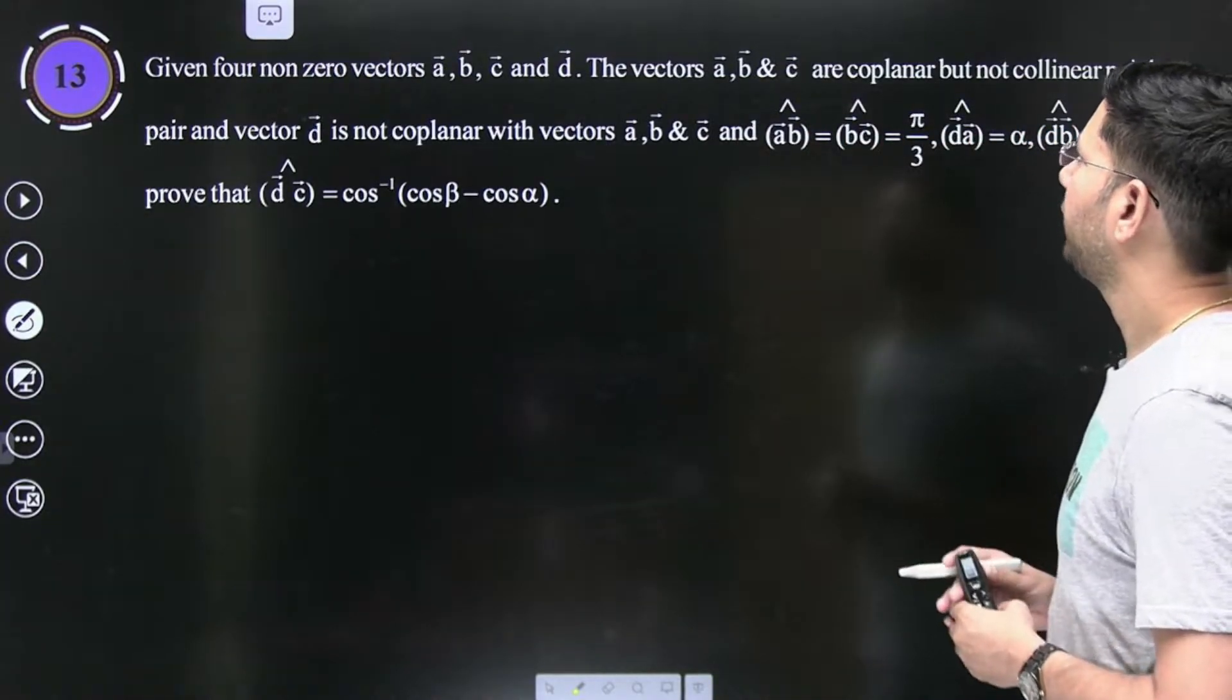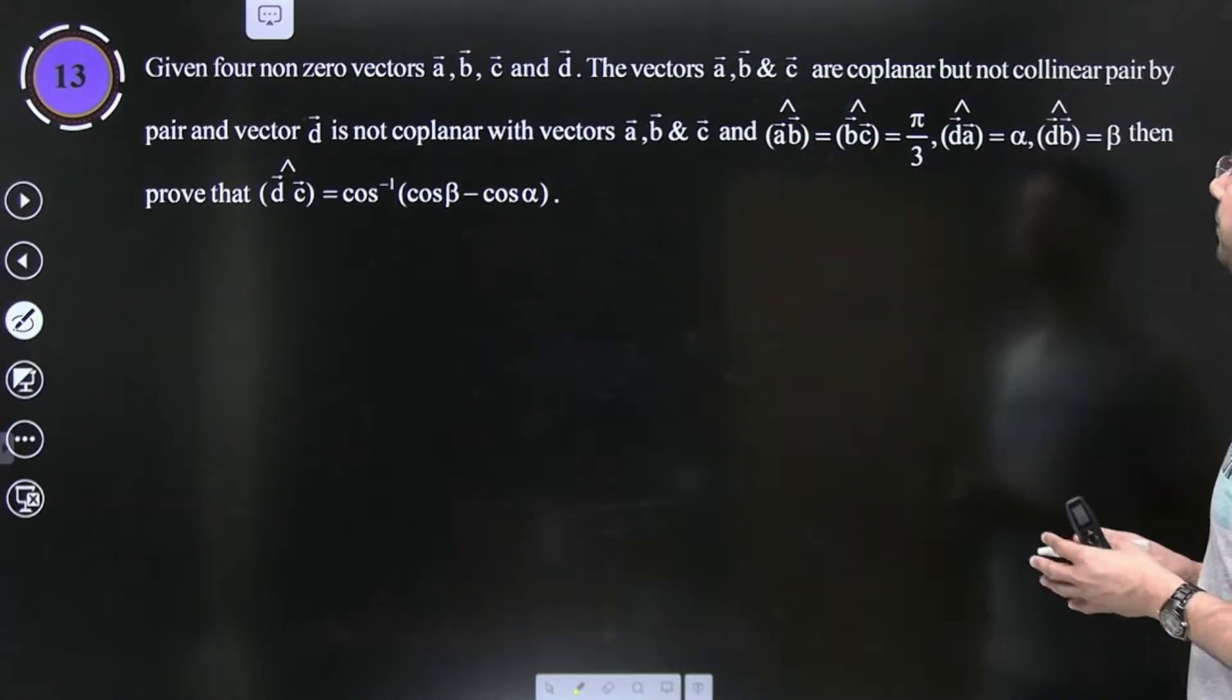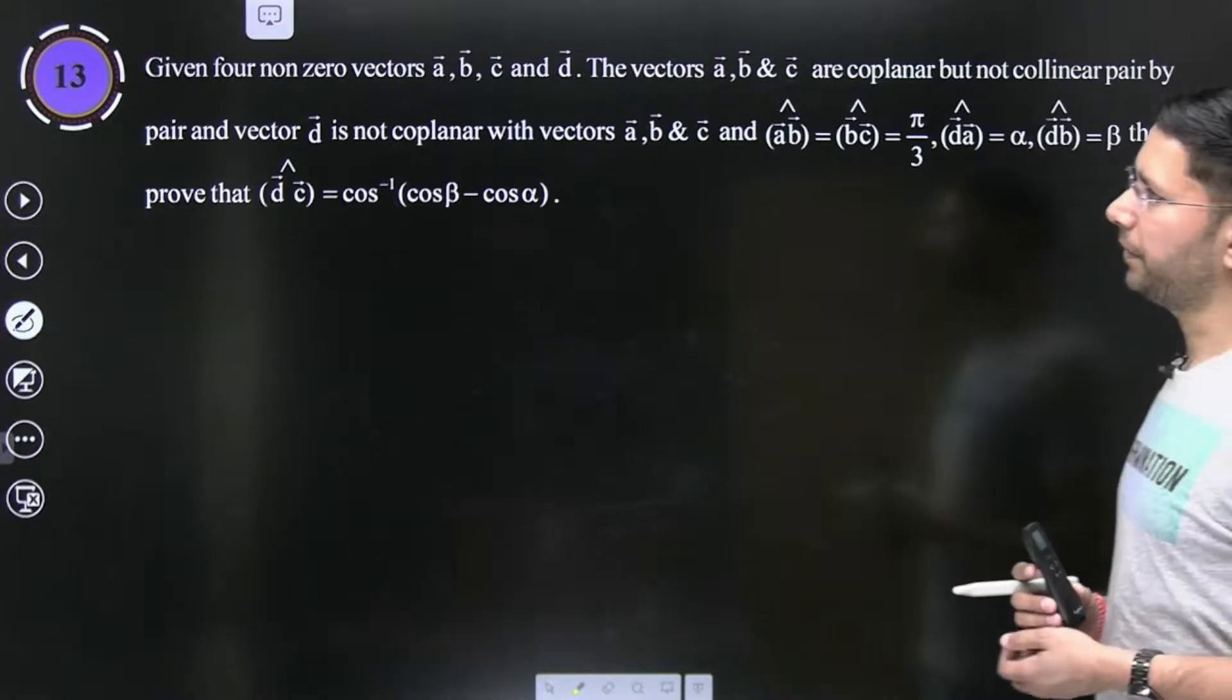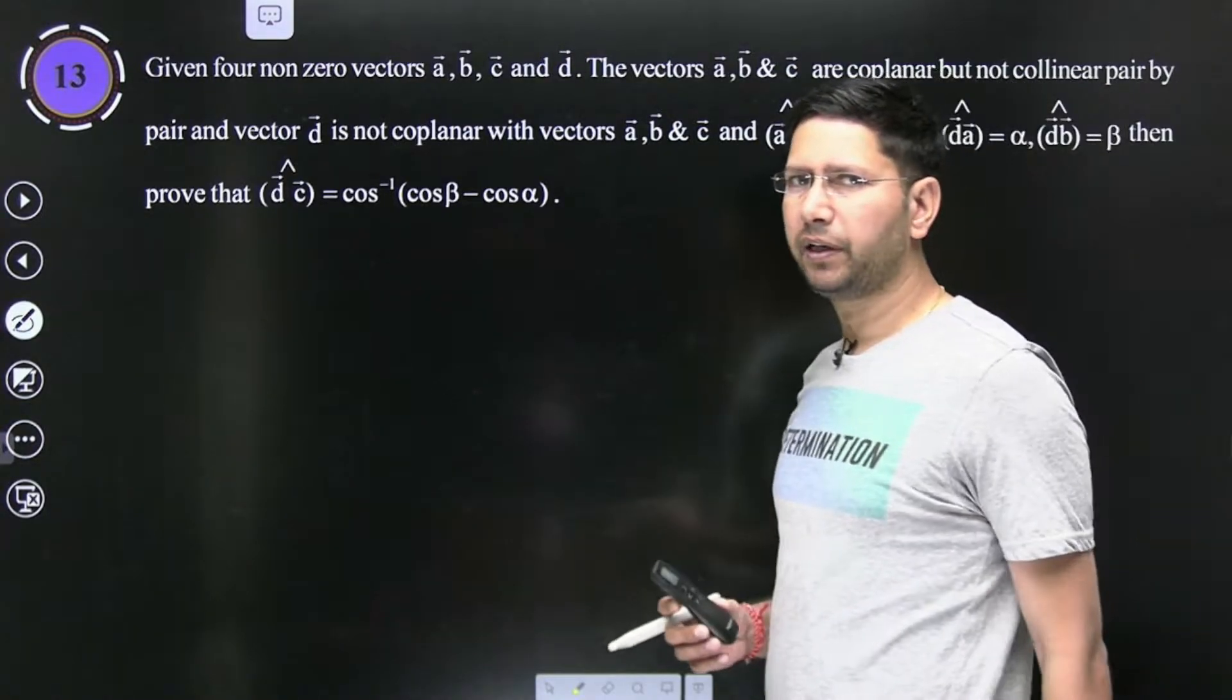Given four non-zero vectors A, B, C, D. The vectors A, B, C are coplanar, thin vector plane mein hai, but not collinear pair by pair. Khani ki koi bhi do pair by pair collinear nahi hai.